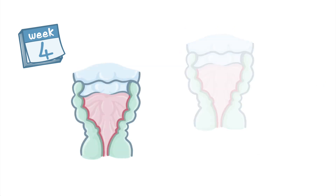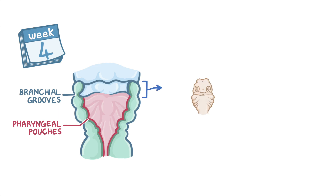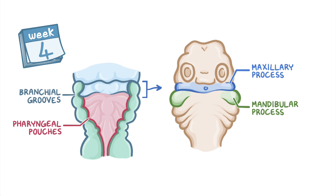The pharyngeal arches are separated externally by small clefts on the pharyngeal wall called branchial grooves, and internally by corresponding depressions called pharyngeal pouches. The first pharyngeal arch splits up into two processes: the upper maxillary process and the lower mandibular process. The pharyngeal arches on either side then proceed to grow towards the midline and merge with their counterparts beneath the stomodeum.